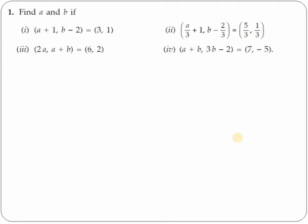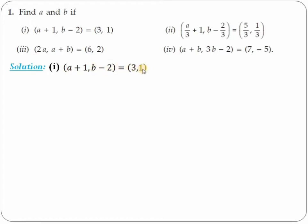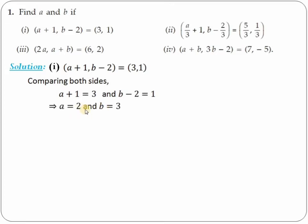Let's begin with the exercises. The exercise on Cartesian product is very easy. In the first question, you need to find the values of A and B. The first element on the left-hand side is A+1 and on the right-hand side it is 3, so A+1 must equal 3. Similarly, B-2 and 1 are second elements, so they must be equal. From here, calculating A and B gives A = 2 and B = 3.